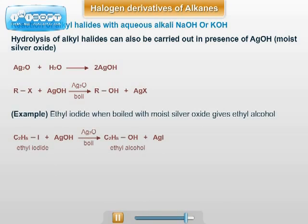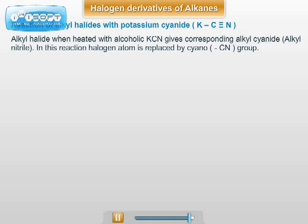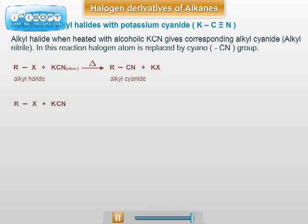For example, ethyl iodide when boiled with moist silver oxide, ethyl alcohol is formed. Reaction of alkyl halide with potassium cyanide, that is KCN: alkyl halide when heated with alcoholic solution of potassium cyanide, it forms the corresponding alkyl cyanide. In this reaction, the halogen atom is replaced by the cyano, that is CN group.